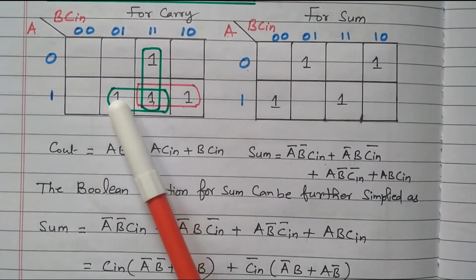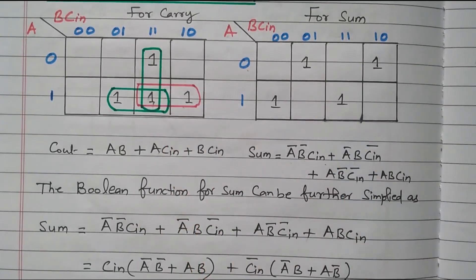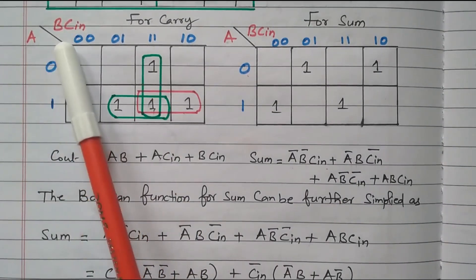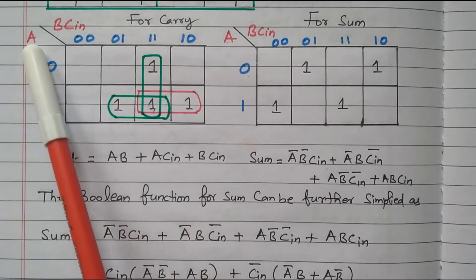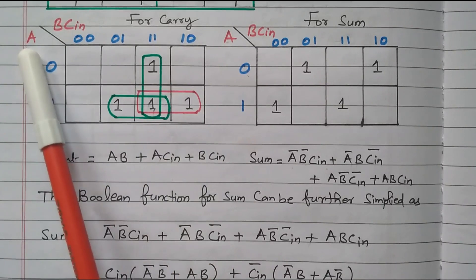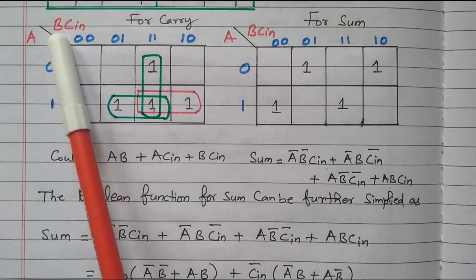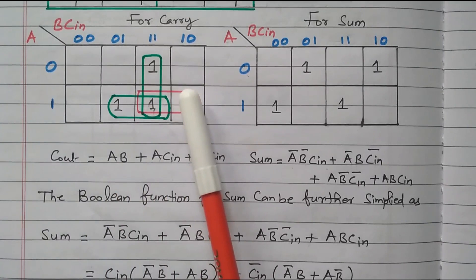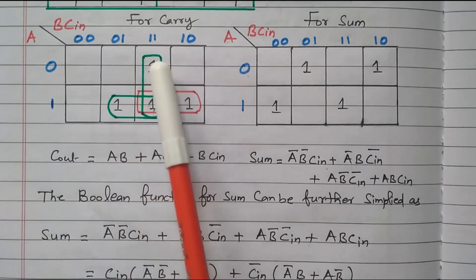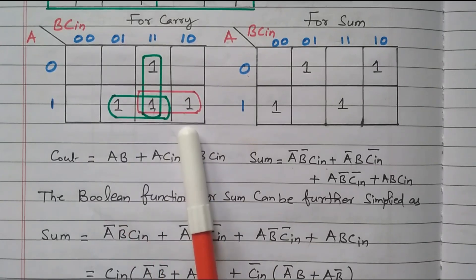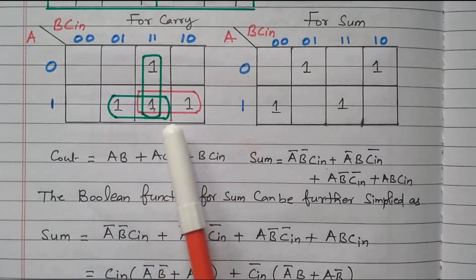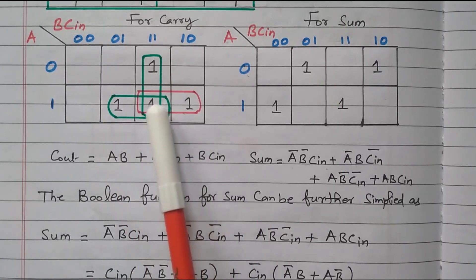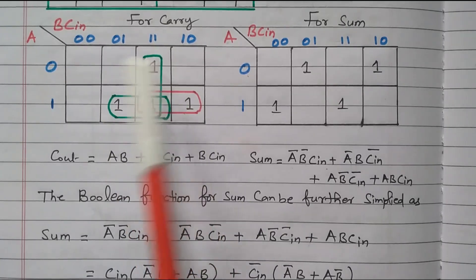This is the K-map for carry-out, and this one is for sum. There are three inputs A, B, Cin — so this is a three-variable K-map. A is taken vertically with two combinations (0 and 1). B and Cin are taken horizontally with four combinations: 00, 01, 11, 10. The four 1s for carry are marked; the remaining terms are 0. There are three groupings: two 1s grouped together in each group.